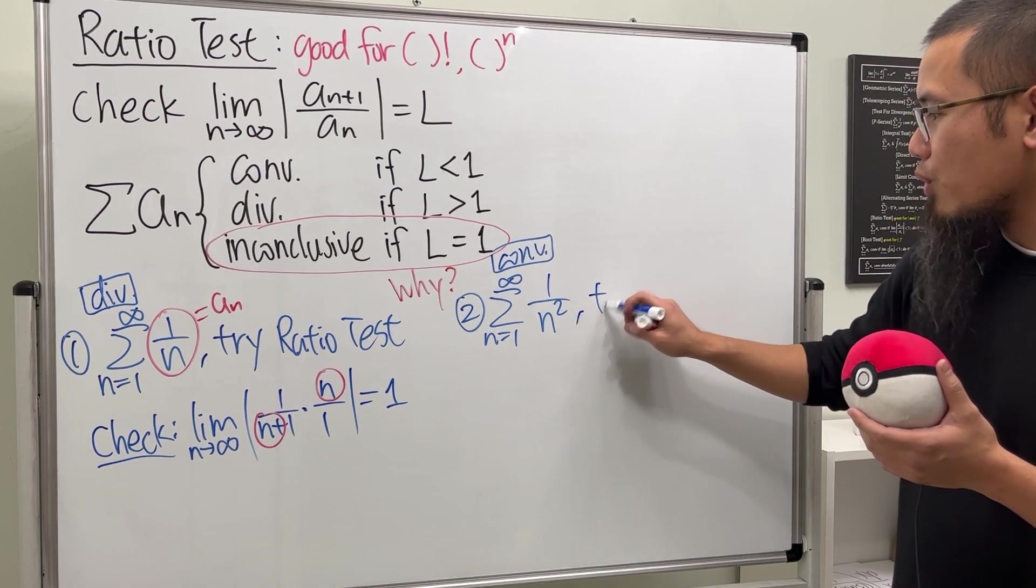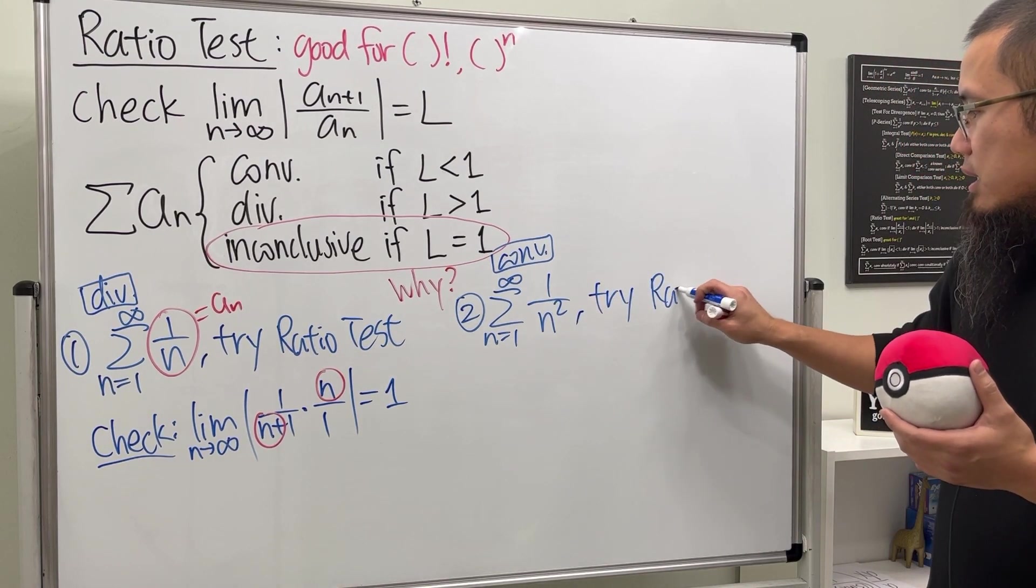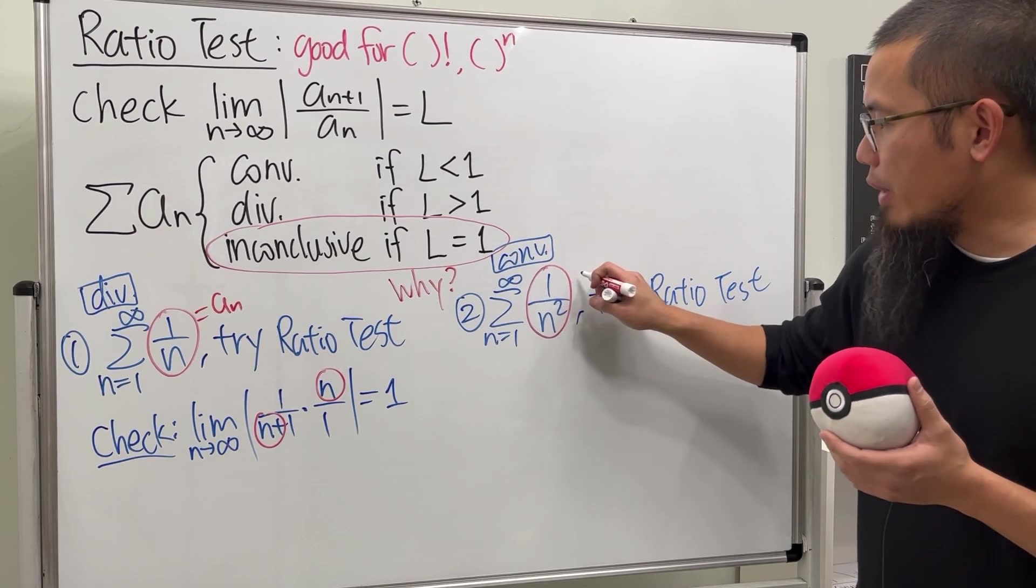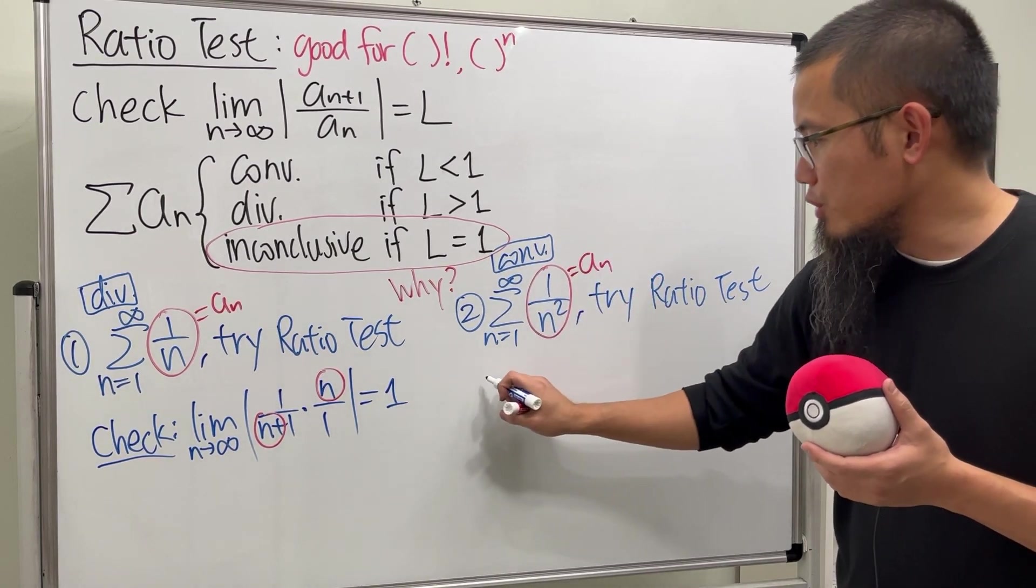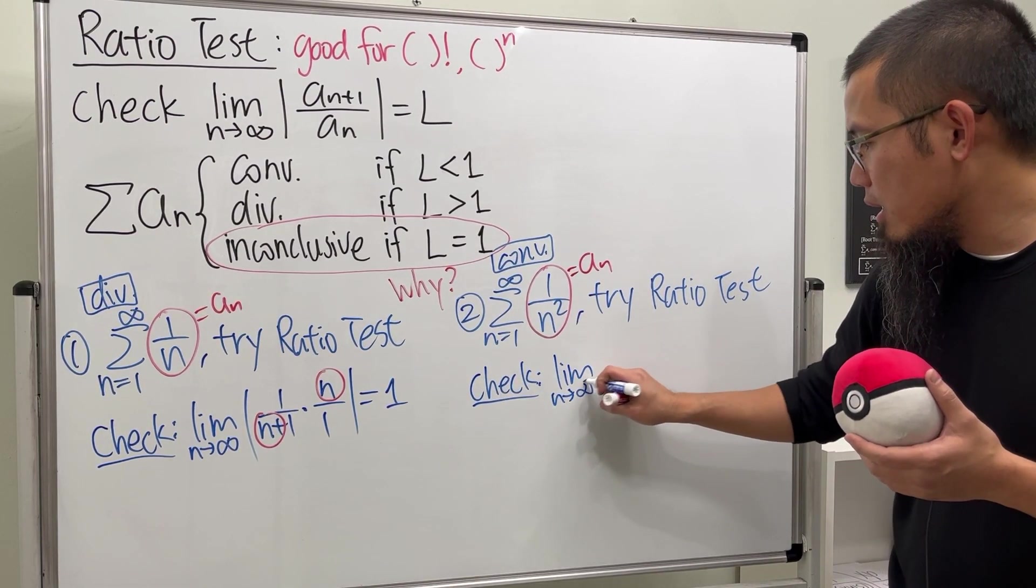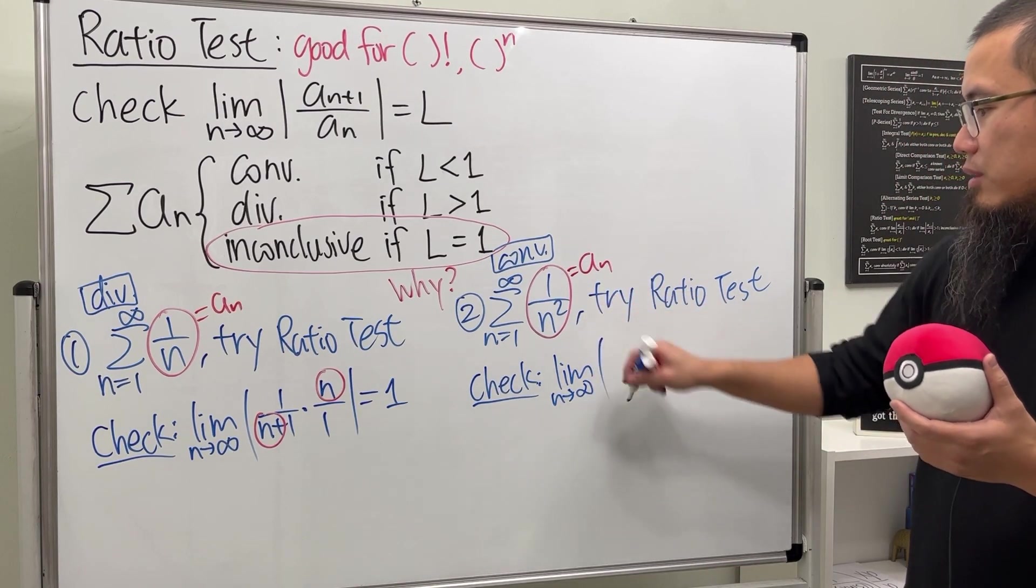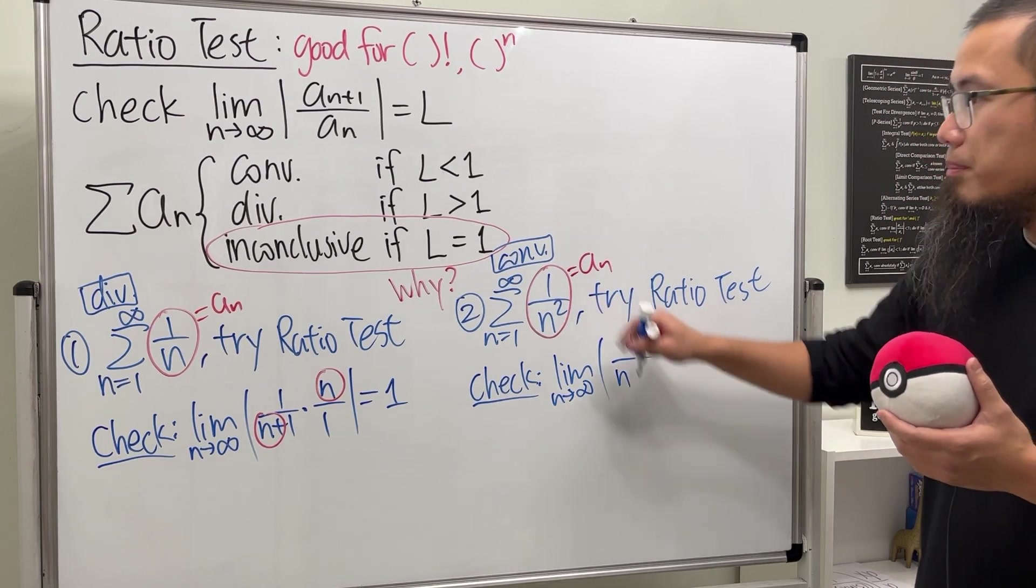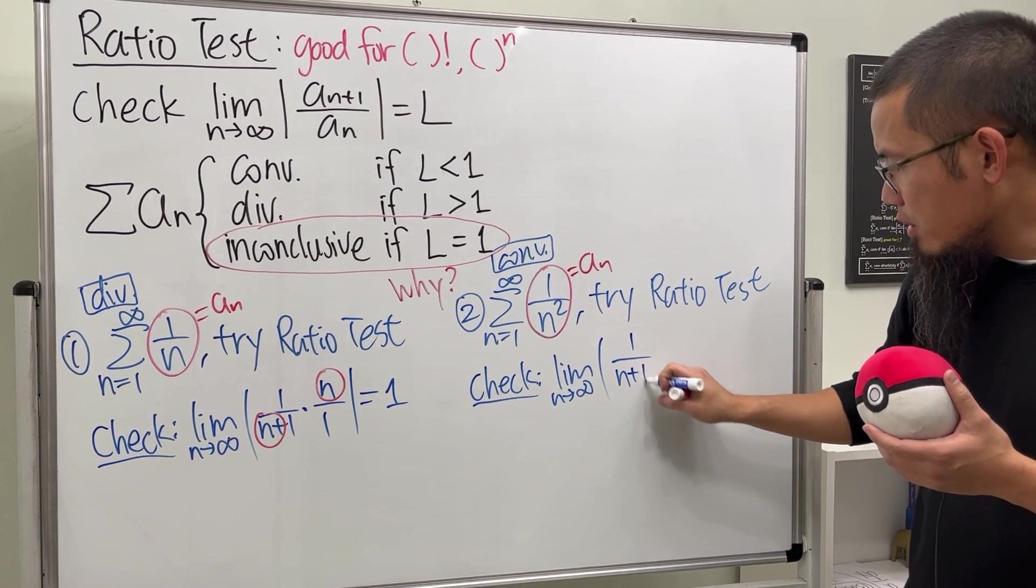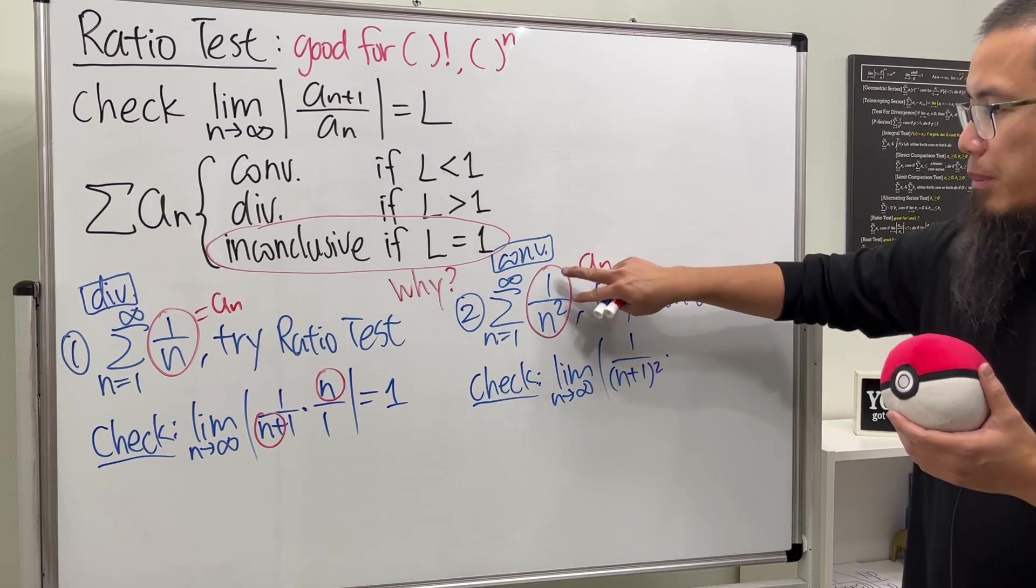However, if we use the ratio test again, let's just try the ratio test. Well, here is our a_n, and then we are going to check the limit as n goes to infinity and the absolute value. And then this right here is one over n, but we have to do a_n plus one, so we do n plus one here and then we square that, and we multiply by the reciprocal of a_n, which is n squared over one.